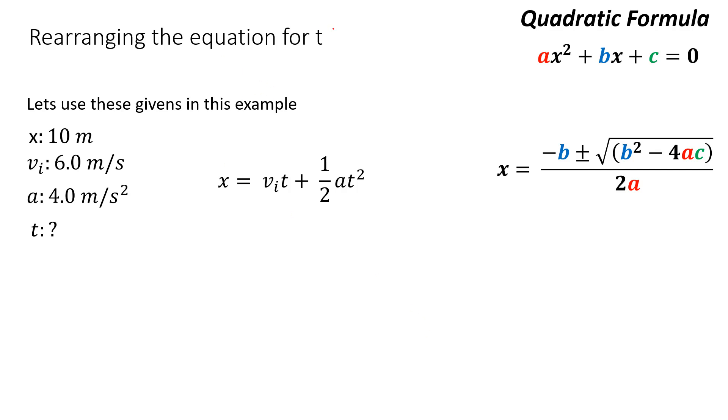Now if I wanted to rearrange it for t, this gets a little more difficult. Sometimes you're lucky enough and if v_i is 0, this first part cancels out and it's pretty easy to rearrange. But if v_i is not equal to 0, you're actually going to have to use the quadratic formula. For example, if I use these numbers, 10 equals v_i of 6 times t plus one half times a which is 4 times t squared. I have 10 equals 6 times t plus 2 times t squared.